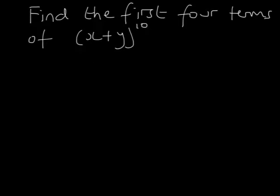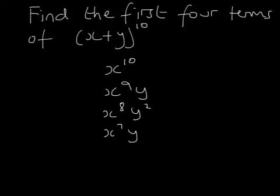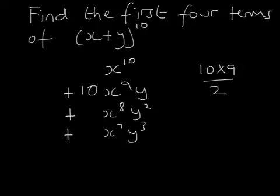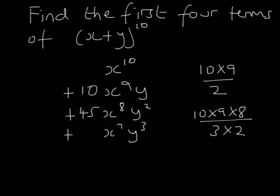Let's do one more example: the first four terms of x plus y to the power of 10. The terms will be x to the power of 10, x to the ninth times y, x to the eighth times y squared, and x to the seventh times y cubed — since every power adds up to 10. The binomial coefficient for the second term is 10, for the third it's 10 times 9 over 2 factorial which is 45, and for the fourth it's 10 times 9 times 8 over 3 factorial which is 120. So there are four ways of working out these binomial coefficients.